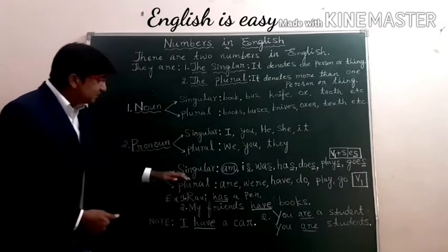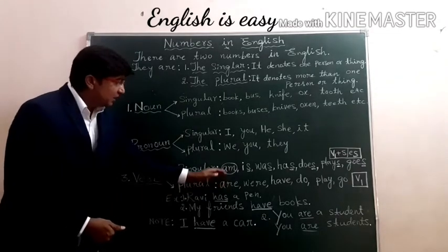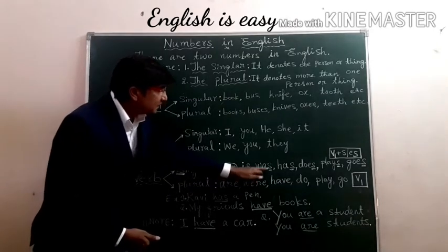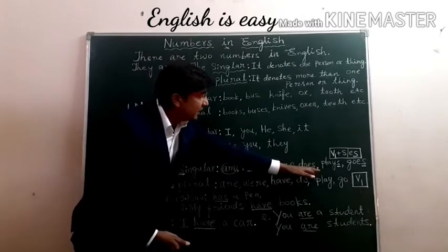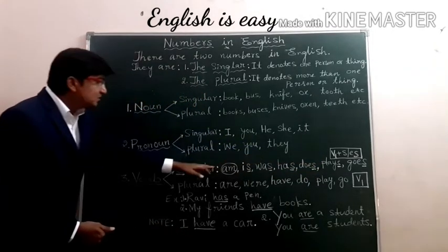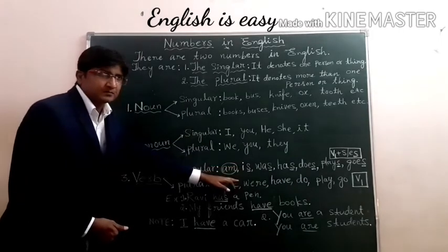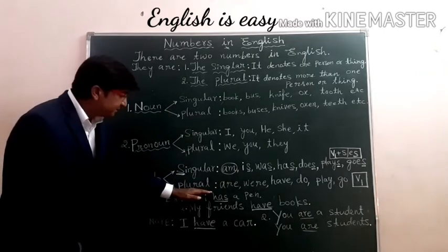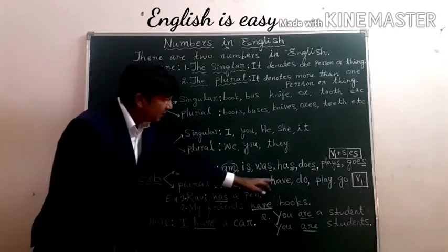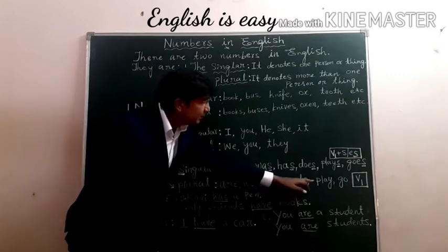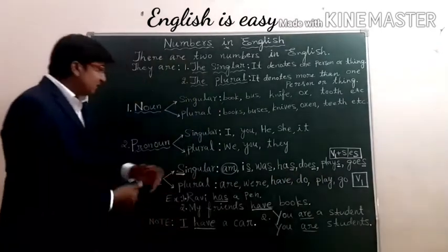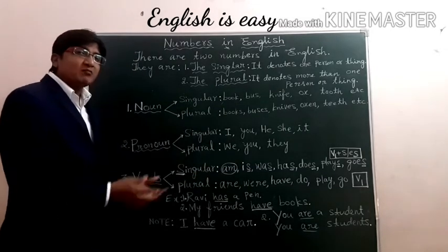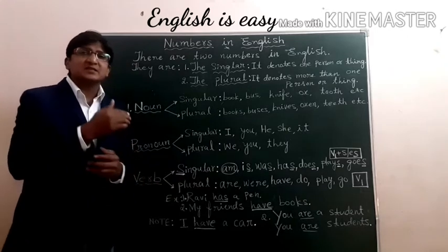Now, first let us see singular verbs. Here I have written: am, is, was, has, does, plays, goes. All these are singular verbs. And then the next one, plural verbs: are, were, have, do, play, go. So let me explain to you clearly about these singular verbs and how you can remember them in the easiest way.